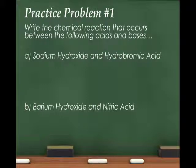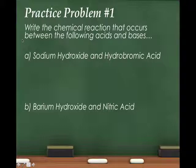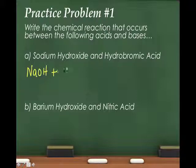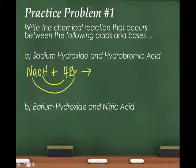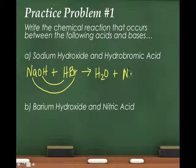We're going to write a couple of these acid-base reactions so you can see how they work. The first one is sodium hydroxide, NaOH, and hydrobromic acid, HBr. When we put these together, we do a double replacement reaction. The sodium is going to go with the bromine, and the hydrogen is going to go with the hydroxide. That hydrogen off the acid and the hydroxide off the base produces water. The other product — the salt — is sodium bromide. Sodium is +1 and bromine is -1, so they go together in a 1:1 ratio.